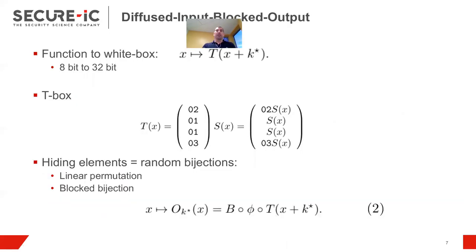So what is DIBO? Let's consider the first operation in AES. So it's a T-box, which is a composition of the S-box and a part of the mix columns operation. And so we aim at hiding this T-box with random bijections. We have a linear permutation phi, and the blocked bijection B.